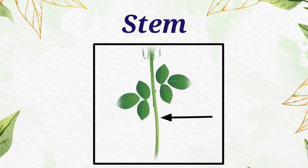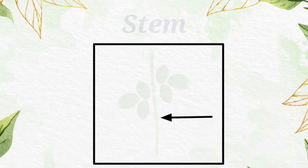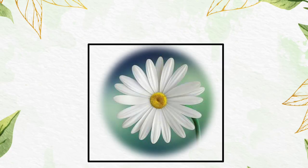Stems help to hold the plant to stand upright and also help to transfer water and nutrients to different parts of a plant. Lastly, tell me which part is this? Very good, it's a flower.